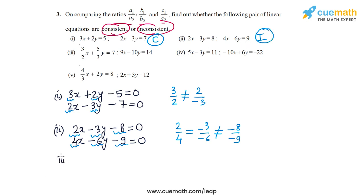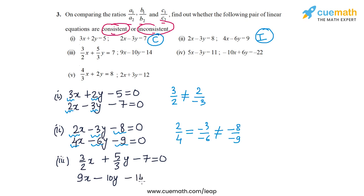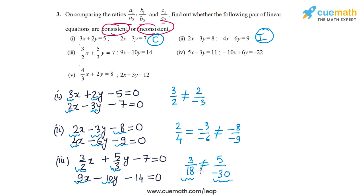For the third part, the equations are (3/2)x + (5/3)y = 7 (or − 7 = 0) and 9x − 10y − 14 = 0. A1/A2 is (3/2) ÷ 9, which equals 3/18 or 1/6 in lowest form. B1/B2 is (5/3) ÷ (−10), which equals 5/(−30) or −1/6. Since 1/6 ≠ −1/6, the ratios are not equal, so I don't need to check C1/C2. The lines will be intersecting, meaning this system is consistent.